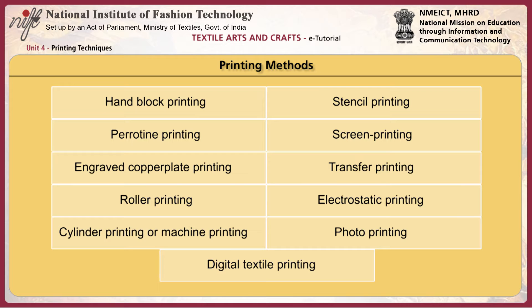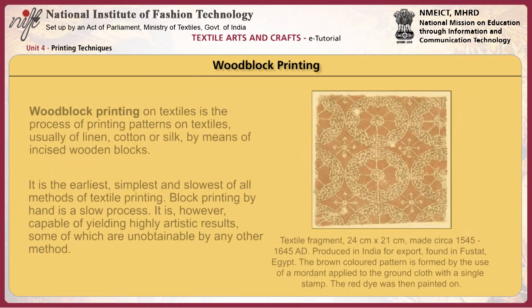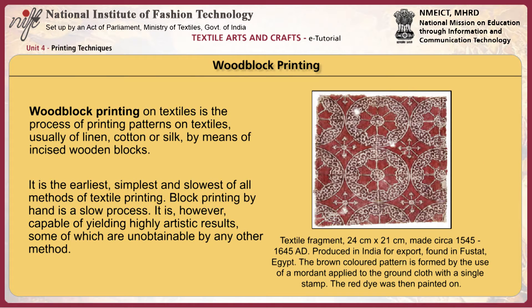Woodblock printing on textiles is a process of printing patterns on textiles, usually of linen, cotton or silk, by means of incised wooden blocks. It is the earliest, simplest and slowest of all methods of textile printing. Block printing by hand is a very slow process; however, it is capable of yielding highly artistic results, some of which are unobtainable by any other method.